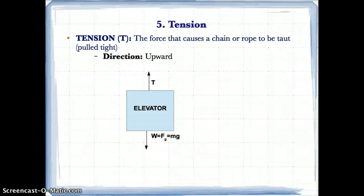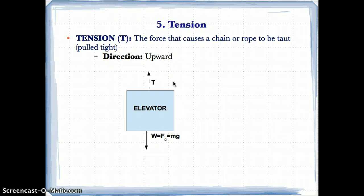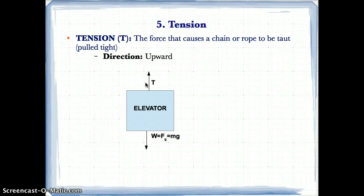Now let's talk about tension. Tension is represented by the symbol capital T, and it is the force that causes a rope or chain to be taut or pulled tight. Its direction is usually upward because it keeps the rope or chain pulled tight and not loose or falling down.